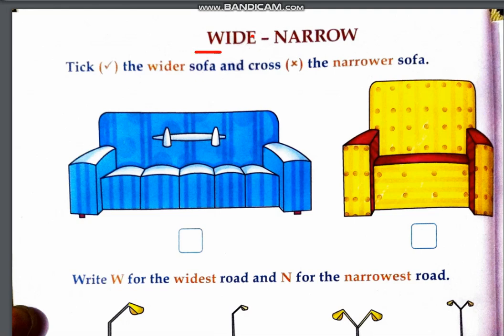Here you have wide and narrow. Wide means chauda and narrow means patla. Now you have to look at the pictures and tell which one is wider and which one is narrower. You have to tick the wider sofa and cross the narrower sofa. Which one is wider and which one is narrower? The first one is wider, so you will tick it. And the second one is narrower, meaning it's patla, so you will cross it.